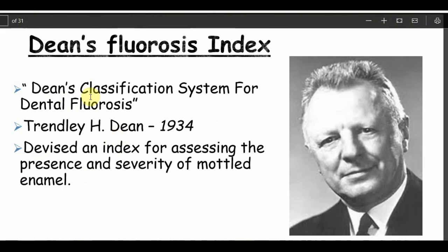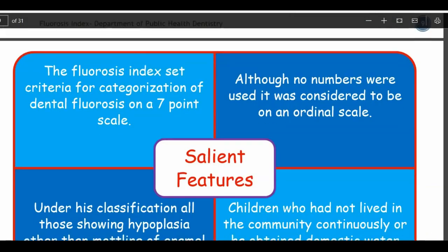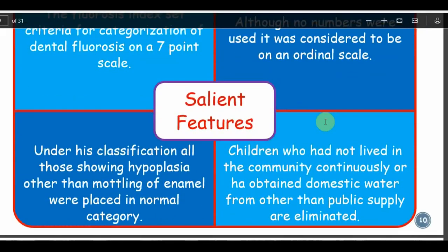Dean's Fluorosis Index was developed by Trendley H. Dean, who performed the shoe-leather survey and the 21-cities study. It is a seven-point scale used to assess the presence and severity of mottled enamel. Although no numbers were assigned, it is considered an ordinal scale — ordered from unaffected to very severely affected. All cases showing hypoplasia other than mottling of enamel are placed in the normal category. Children who have not lived continuously in the community or who obtained water from a source other than the public supply are excluded.